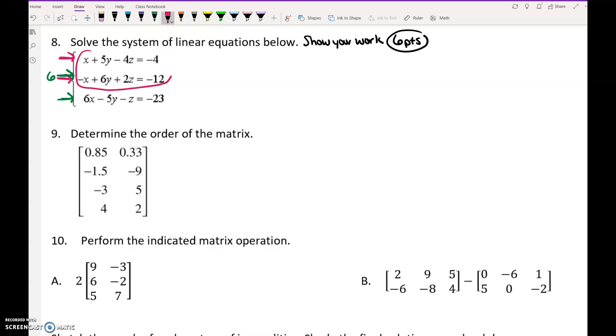So for the x's, first I'm going to add these first two equations because they are perfectly ready. x and negative x, they eliminate. 5y, 6y, that is 11y. Negative 4z and 2z is negative 2z. Negative 4 and negative 12 is negative 16. So I added those together and got that thing over there. Now I need to multiply the middle equation by 6. That will give me negative 6x plus 36y plus 12z equals, what is negative 12 times 6? Negative 72. And we use the bottom equation as is.